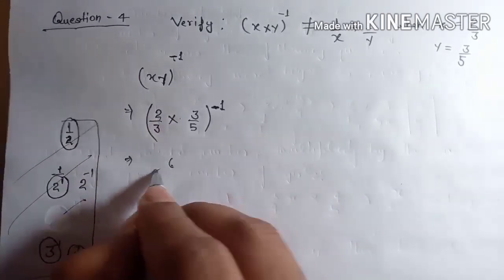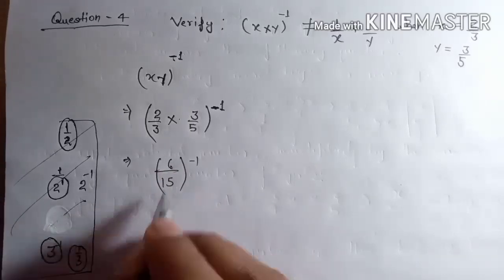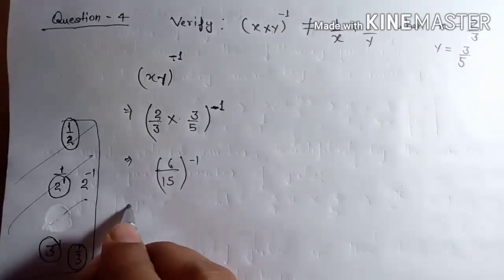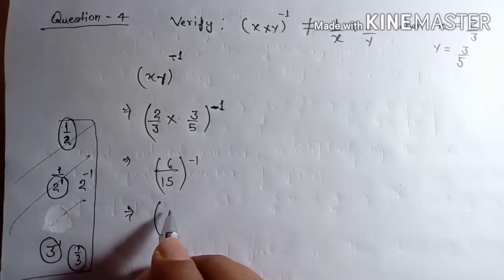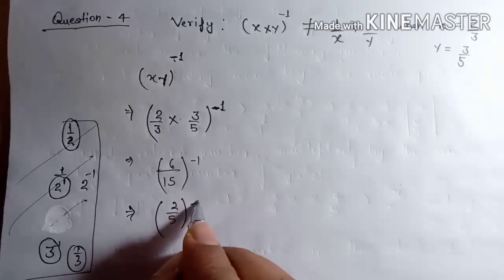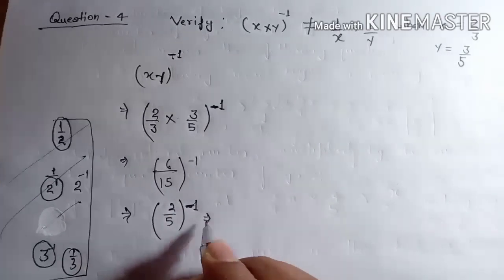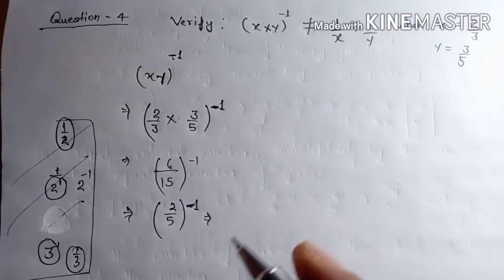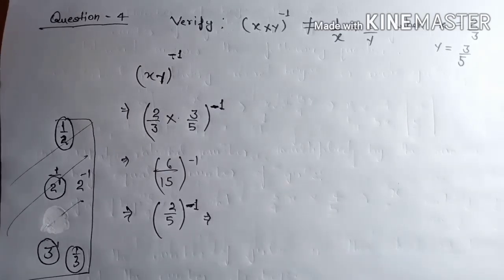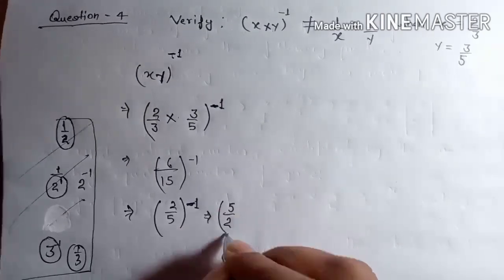Multiplying gives us 6 upon 15 to the power minus 1, which simplifies to 2 upon 5 to the power of minus 1. When the power is minus 1, you reverse the order — the numerator becomes the denominator and the denominator becomes the numerator. So it becomes 5 upon 2.